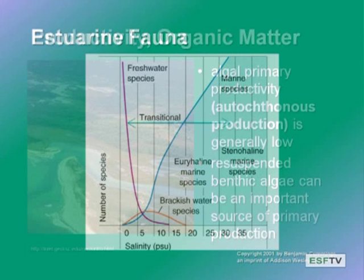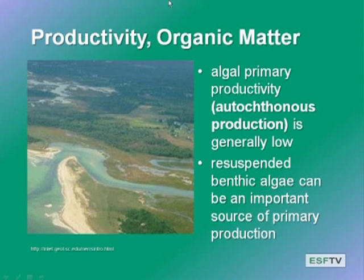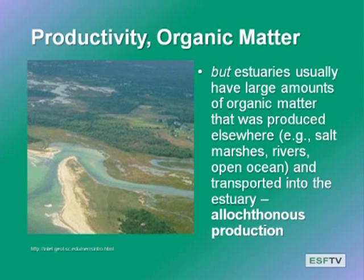The primary producers are generally present but not very productive, often because of light limitation. You can get organisms in the water column or on the bottom that are growing, but autochthonous production within the marsh is generally pretty low. However, there are huge amounts of organic material available as food — it's either transported from the fringing salt marshes, from the rivers, or the open ocean. So allochthonous production is going to drive much of the higher trophic levels in the marsh.